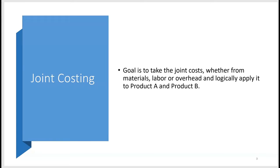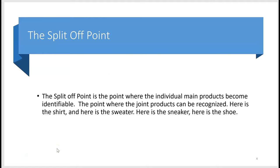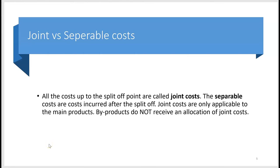Those early joint costs are incurred up until the two products split off. The split-off point is the point where the individual joint products become identifiable — the point where you can recognize them. For example, when we first started the process we couldn't tell what was a shirt and what was a sweater, but once they split off we could tell. The joint cost is all the cost incurred prior to the split-off point.